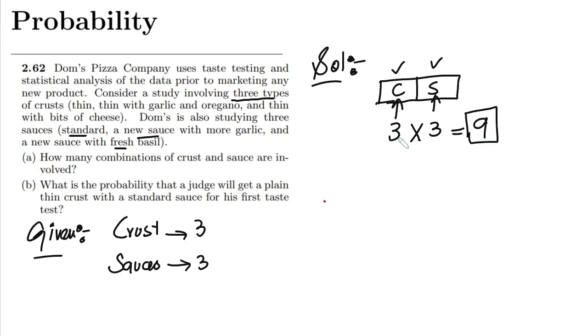Okay, so this is the solution of part a. Similarly, what is the probability that a judge will get a plain thin crust with the standard sauce for his first test? As we can see, each of the items here has the same probability of occurrence, each is equiprobable.